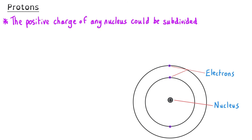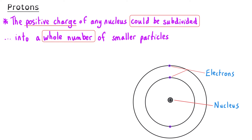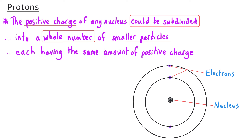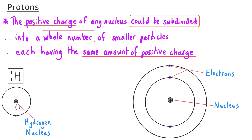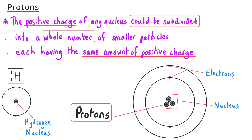Later experiments by Rutherford and other scientists led to the idea that the positive charge of a nucleus could be subdivided into a whole number of smaller particles, and each of these smaller particles has the same amount of positive charge as each other. This amount of positive charge was the same as the charge of a hydrogen nucleus. These particles were given the name protons. So the nuclear model had been refined such that the nucleus was not a single entity but was made up of small particles called protons, orbited by electrons in specific energy levels.